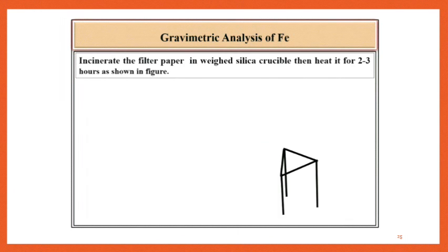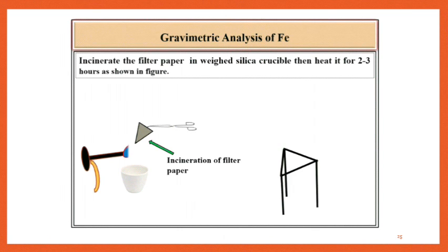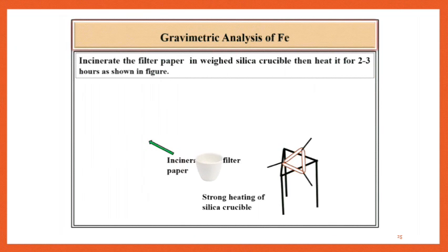The next step is incineration of filter paper. The procedure is: take previously weighed crucible and fold the filter paper as shown in the video and heat it strongly on blue flame. Then transfer it in a crucible and heat this crucible on a blue flame strongly for 2 to 3 hours.